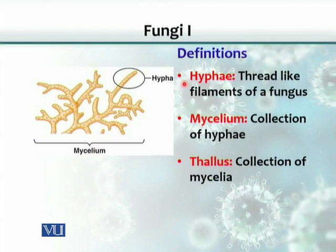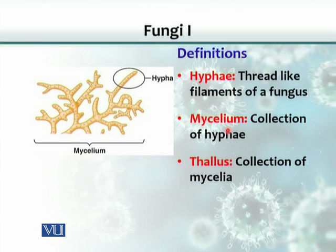A few definitions. The word hypha is singular. If you add 'e' at the end, it becomes plural and is pronounced as hyphae. Hyphae are single thread-like filaments. A collection of hyphae is called mycelium. Similarly, mycelium is singular; if you add 'a' after the 'i' — M-Y-C-E-L-I-A — this becomes mycelia, which is plural. So a collection of hyphae is called a mycelium, and the plural is mycelia.